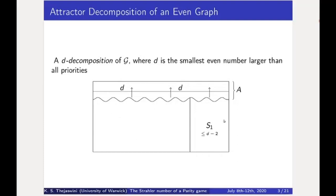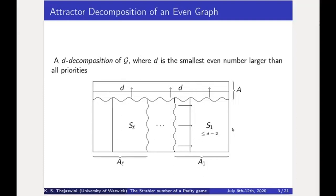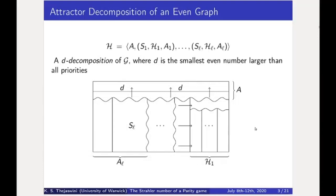Once we identify such an S1, we look at A1, which is just the attractor of S1, and look at the remaining part of the graph. In this, we iteratively identify S2, S3, and so on till SL. Since each of these SIs contain only vertices of priority at most D minus 2, they must also recursively have a decomposition. With this, we define the attractor decomposition of an even graph. If a cycle contains priorities all smaller than D minus 2, it lies entirely in one of these SIs and is even by the recursive argument. If not, it must pass through A, which means it contains a vertex of priority D, making that cycle even.